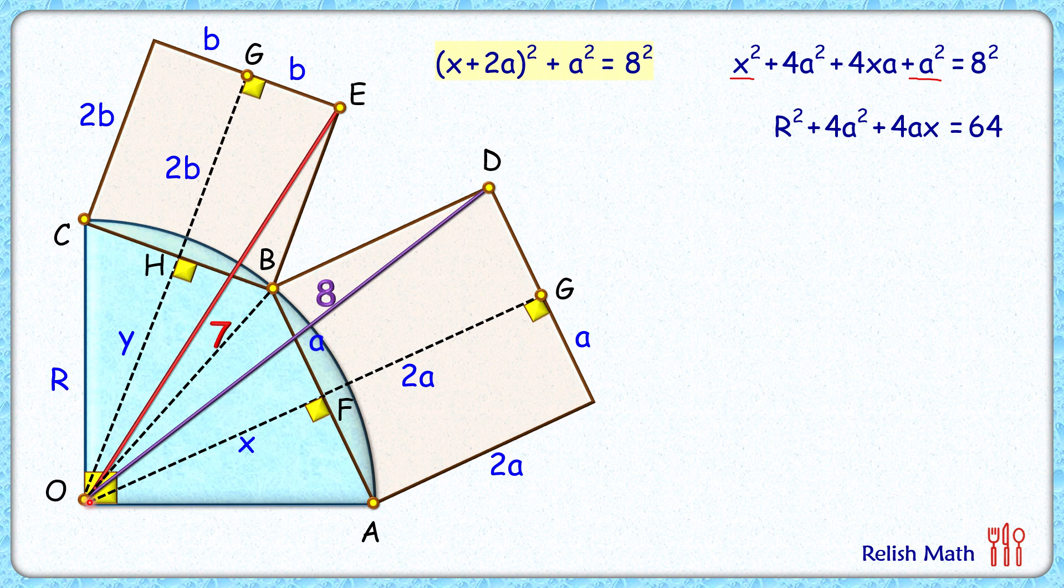Again looking at triangle OGE, applying Pythagorean theorem we'll get (y + 2b)² + b² = 7². Opening up the bracket we'll get the equation in this form. If we form triangle OHB, HB length is b cm, and from this triangle we'll get y² + b² = OB².